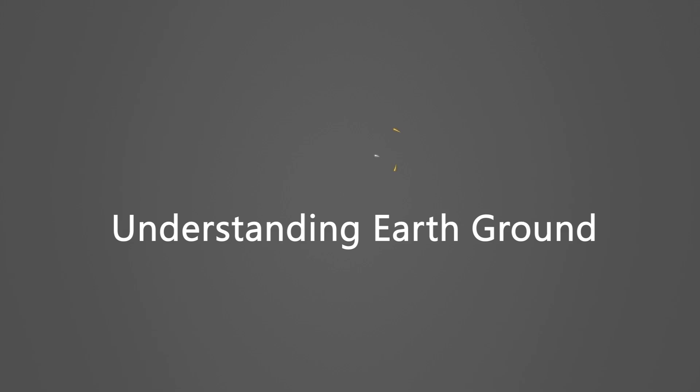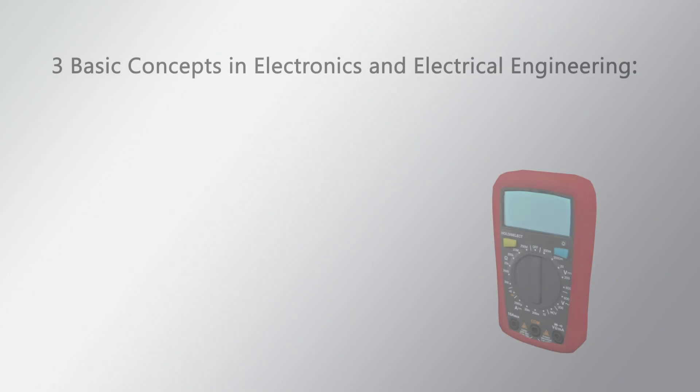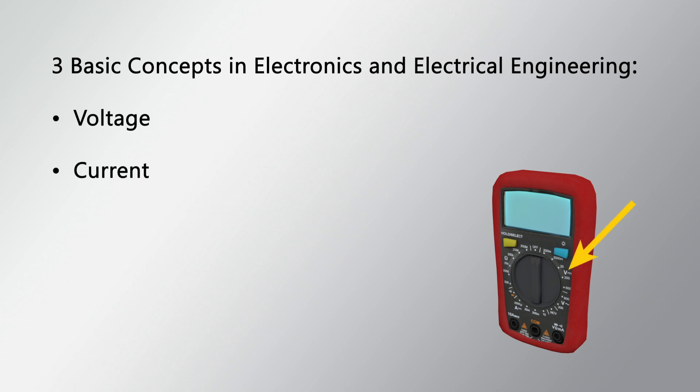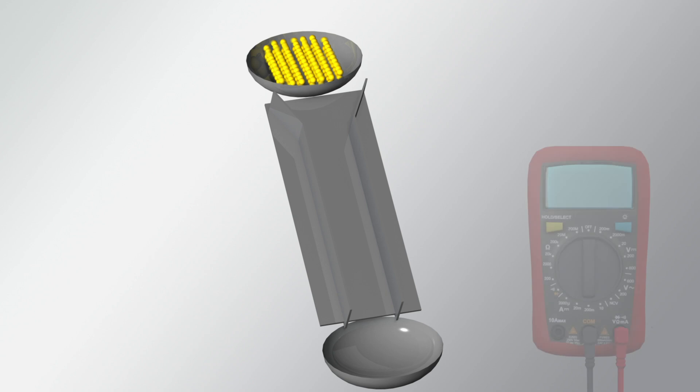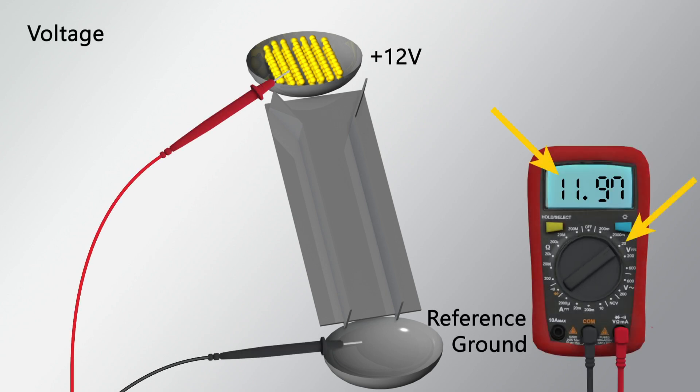In electronics and electrical engineering, three basic concepts are voltage, current, and resistance. Understanding these is necessary for making proper decisions related to grounding. Voltage is the measure of the difference in electrical potential energy between two points in an electrical circuit. It provides the driving force that causes electric charges to flow. Because a voltage measurement is a difference in electrical potential, one of the points of measurement is chosen to be a reference and the other point is compared to that reference.